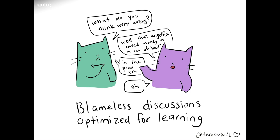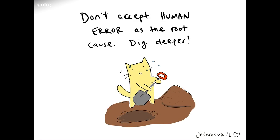The one non-negotiable component is that this environment must be blameless. Blameless conversations focus on learning rather than justice. By having these conversations, you'll always discover that every single person involved had a different perception of what they thought was happening before and after the outage — which means people had different operating mental models. Please don't ever let your incident reviews collapse on human error as a root cause. Dig a little bit deeper — you'll learn more if you dig deeper.